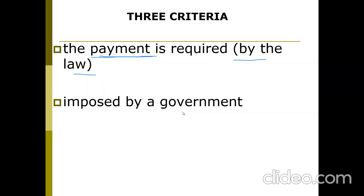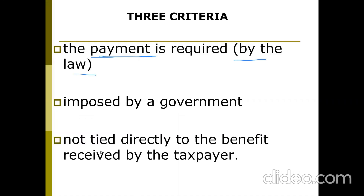Second, tax is compulsorily imposed by a government. Private persons cannot collect or impose tax — it is levied, imposed, and collected by a government only. Third, it is not tied directly to the benefits received by the taxpayer. The taxpayers' amounts may be distributed among the entire society.